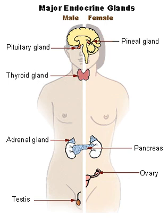Other common diseases that result from endocrine dysfunction include Addison's disease, Cushing's disease, and Graves' disease. Cushing's disease and Addison's disease are pathologies involving the dysfunction of the adrenal gland. Cushing's disease is characterized by the hypersecretion of the adrenocorticotropic hormone due to a pituitary adenoma that ultimately causes endogenous hypercortisolism by stimulating the adrenal glands. Some clinical signs of Cushing's disease include obesity, moon face, and hirsutism.